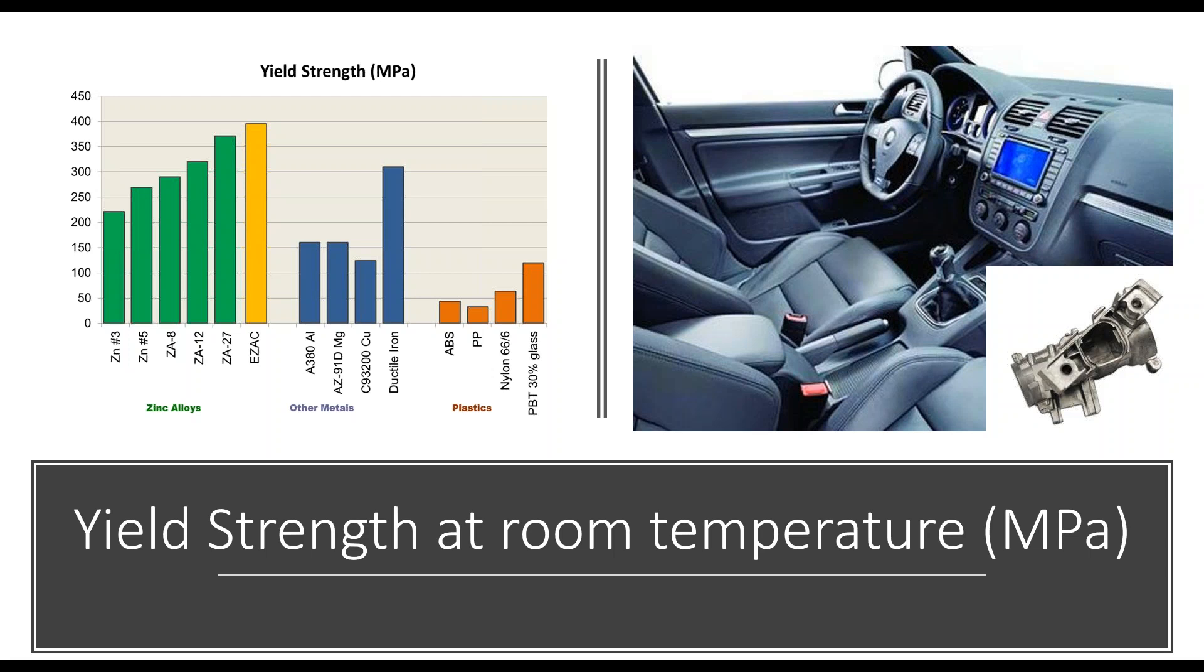Standard Zamak 3 is approximately one and a half times stronger than aluminum 380, and EZAC is approximately two and a half times stronger than 380. Castings like these steering columns are made in Zamak alloys due to its combination of strength and net shape casting ability.